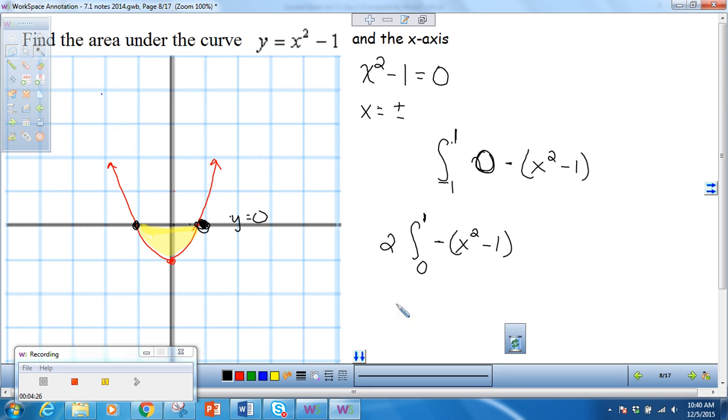Okay, so now we're just back to what we did before. So we're going to take out that negative, integrate from 0 to 1 of X squared minus 1, DX.